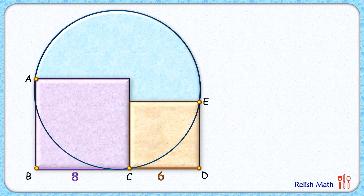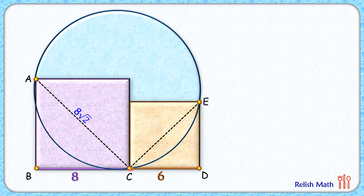Let's check this simple, short, and elegant solution. We start by joining A and C, which is the diagonal of the first square — by formula it will be 8√2 centimeters. Similarly, joining E and C gives the diagonal of the brown square, with length 6√2 centimeters. In each square, the angle between the diagonal and the side is 45 degrees.